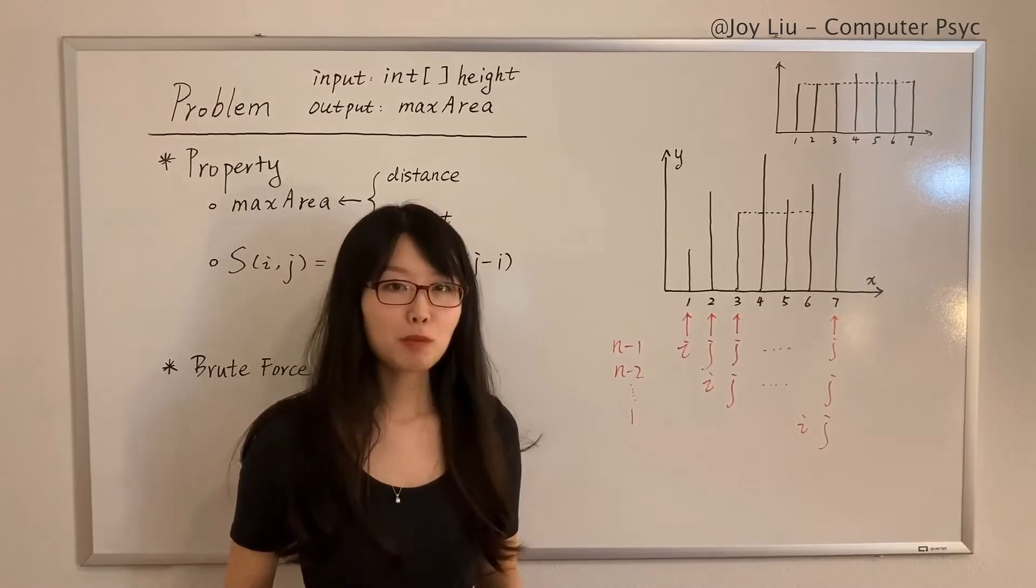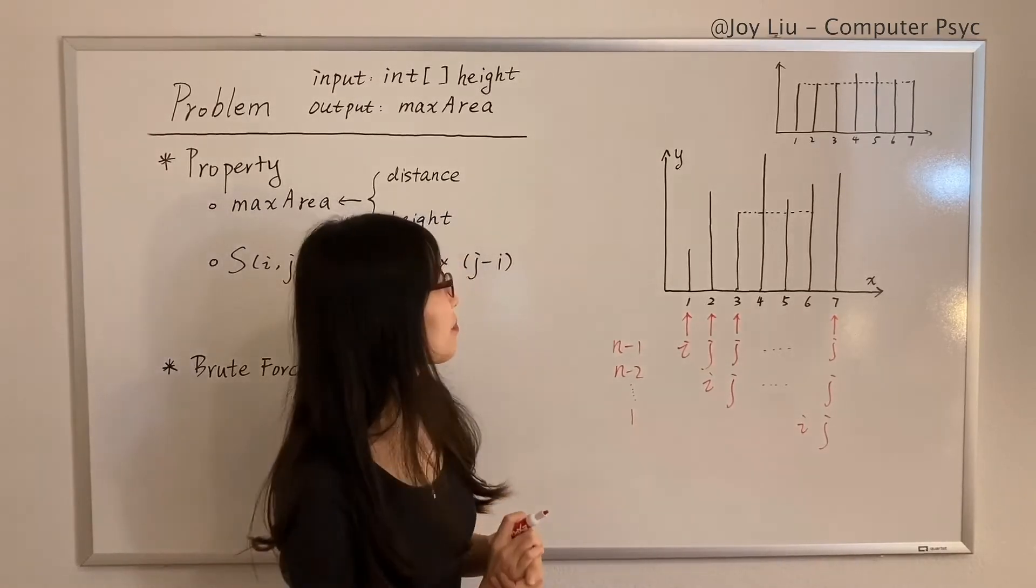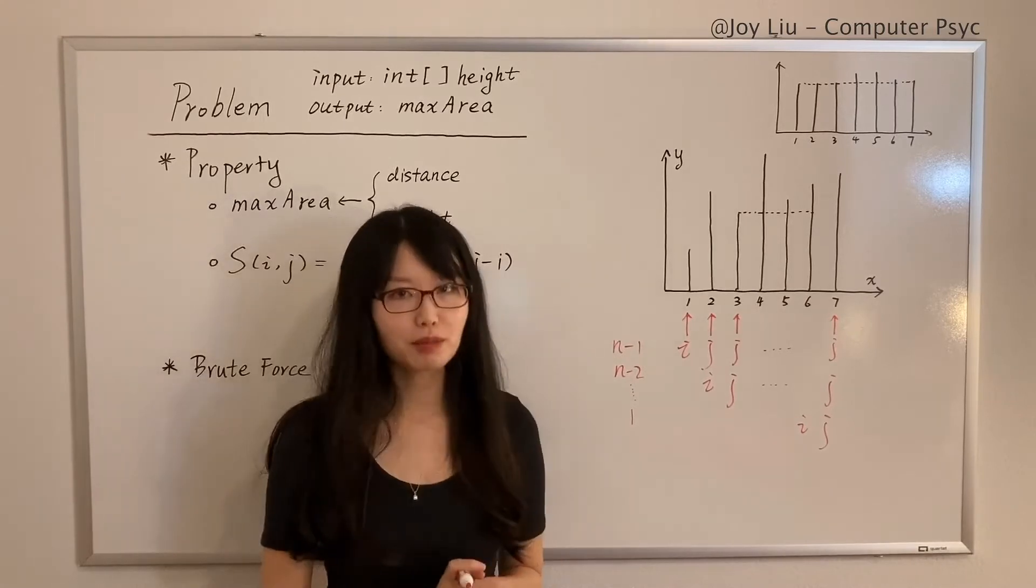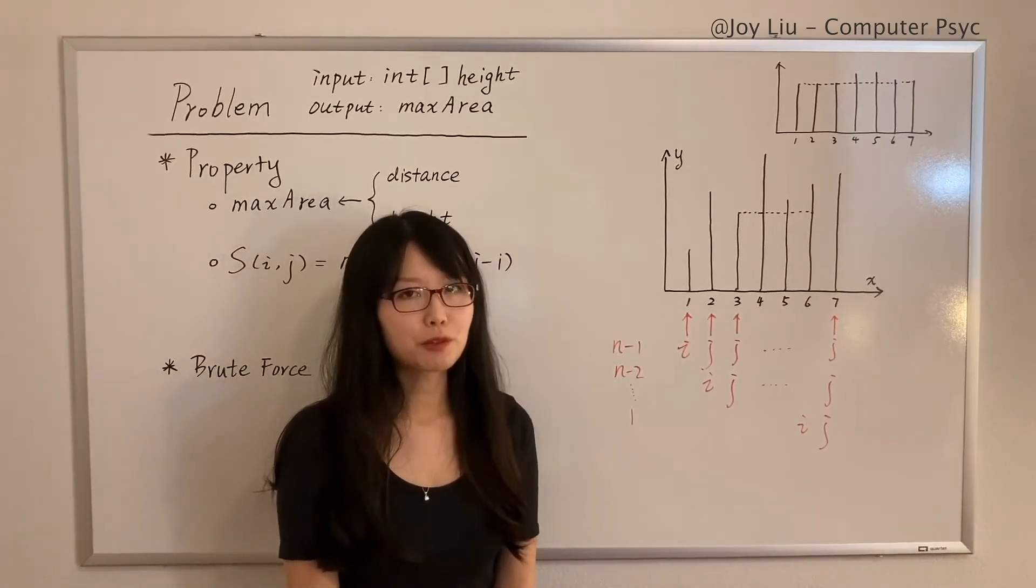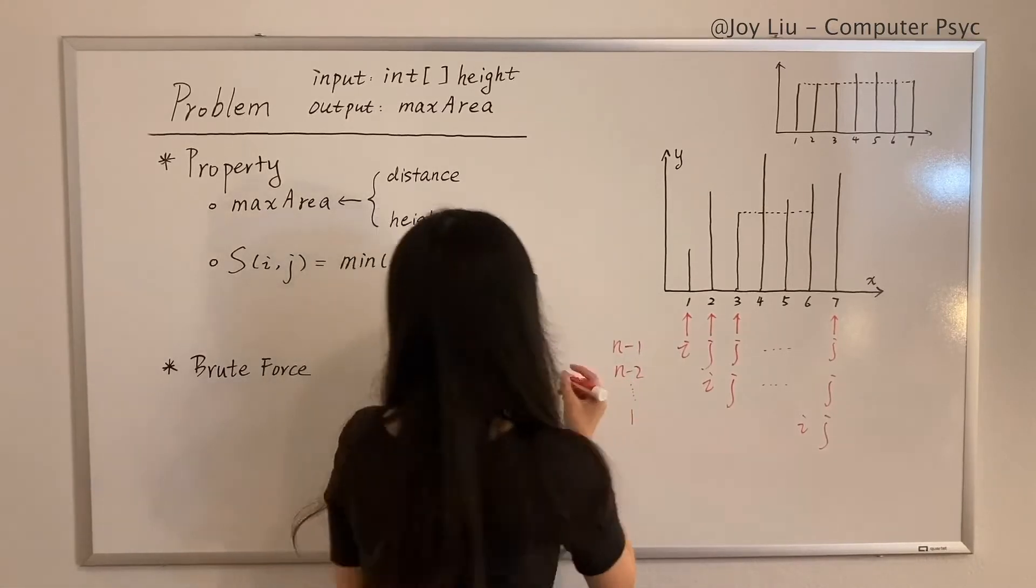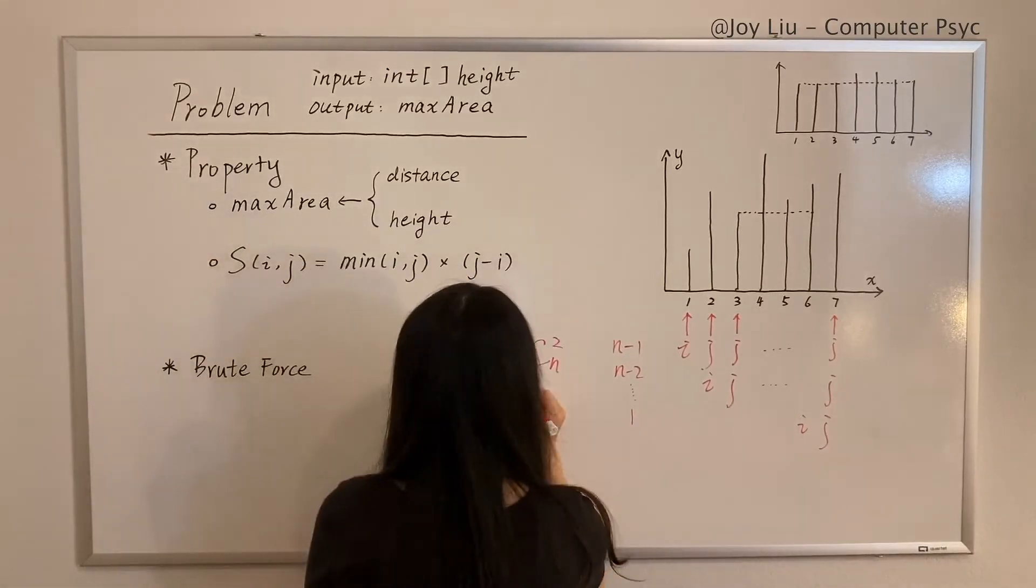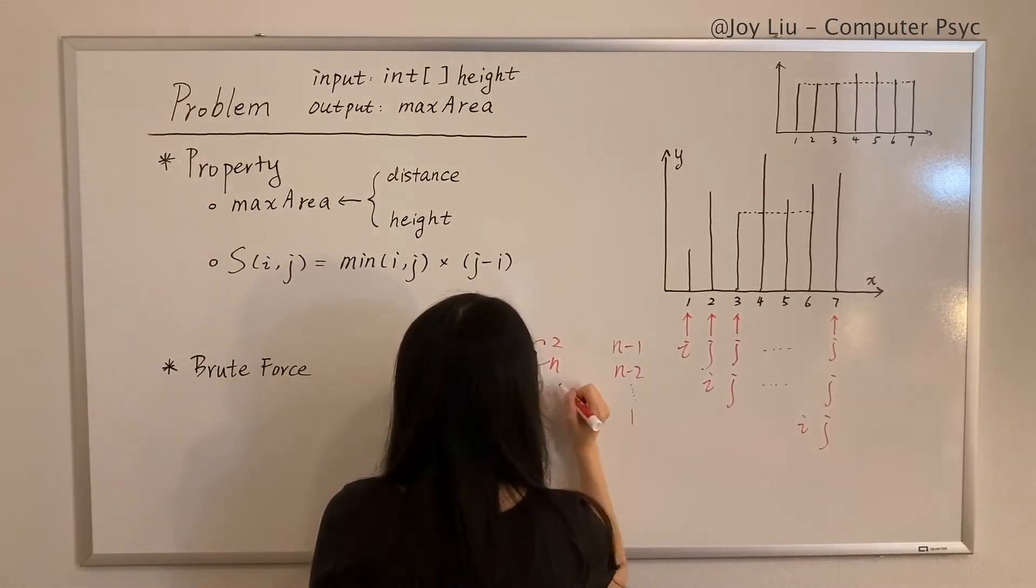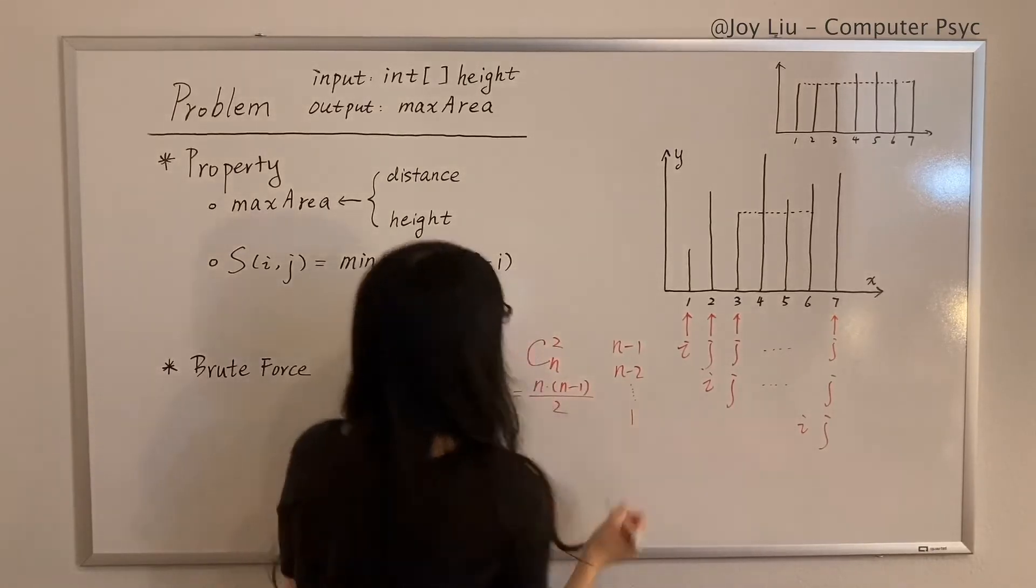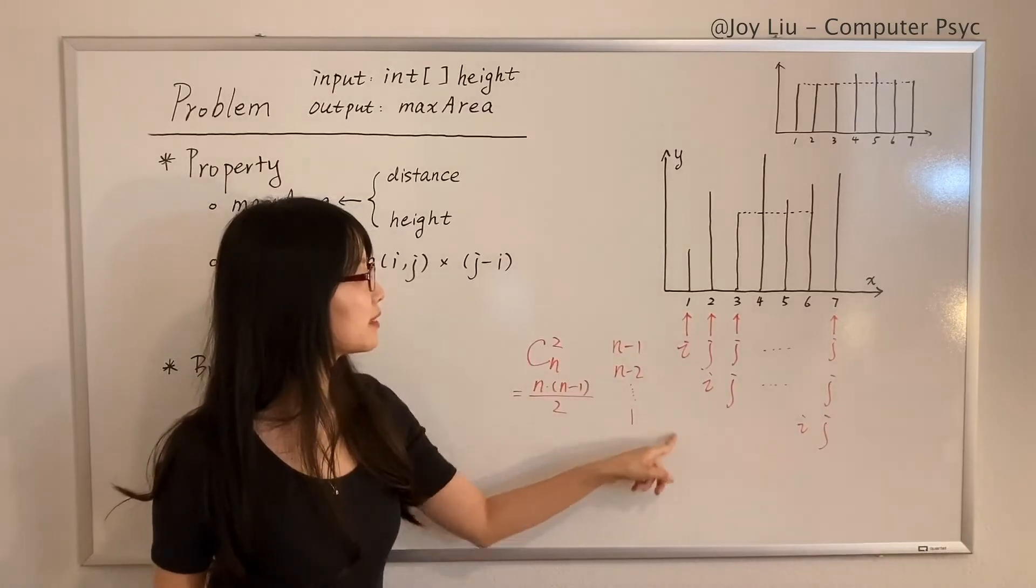And the last one is one. So if you add them up, that would be O(n²). Another way to think about it is: how many possible containers can we make? We can use combination to solve this problem. So if we're picking up two lines from n lines, that would be C(n,2), which equals n times (n - 1) divided by 2, which is exactly the same as this.